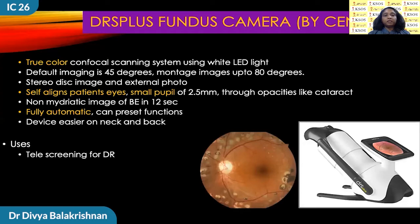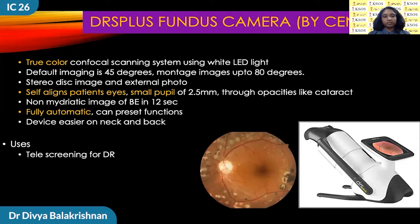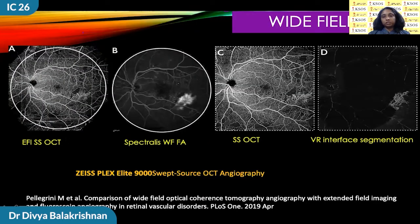Most widefield images use a different wavelength and produce a pseudocolor image, while the DRS Plus fundus camera by CenterVue actually uses a white LED to get a near-normal color fundus. It can be used in small pupils and is fully automatic, and can be used as a screening tool for diabetic retinopathy. Another advancement is widefield OCT — one major disadvantage of OCT was its limited field.